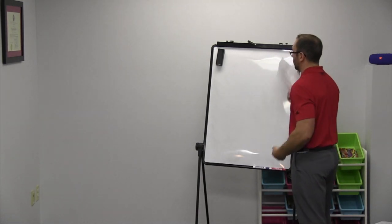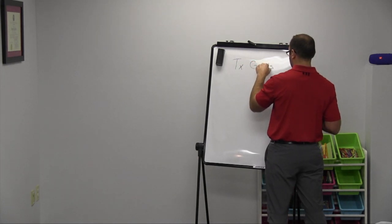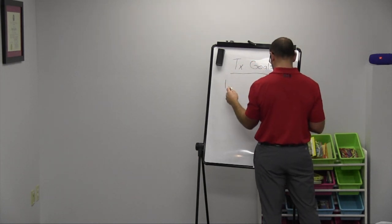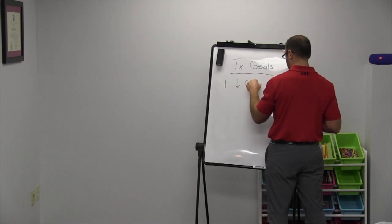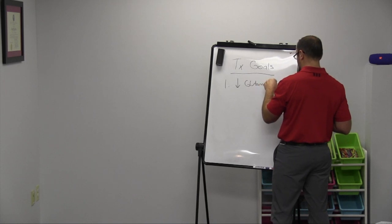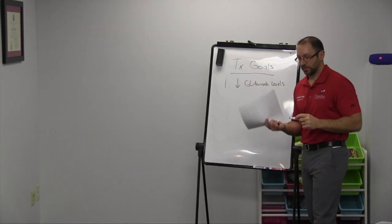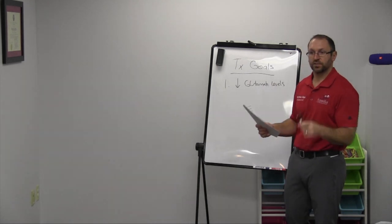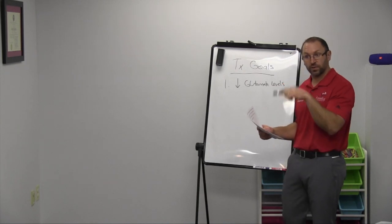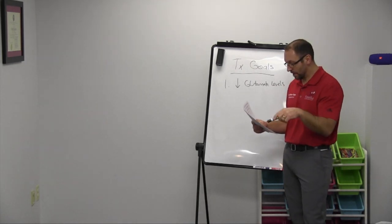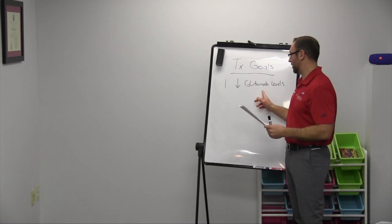So what are our treatment goals when it comes to migraines? Number one. Decrease glutamate levels. So we need to decrease these glutamate levels. Without doing that, you're still going to get that glial cell excitation, so you're going to be more sensitive to pain, more sensitive to exercise, food, all that type of stuff. So how do we do this?